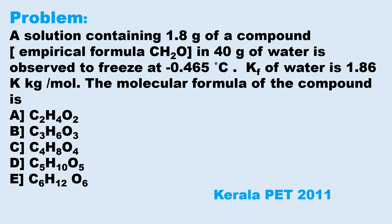A solution containing 1.8 grams of a compound with empirical formula CH2O in 40 grams of water is observed to freeze at −0.465°C. Kf of water is 1.86 K·kg/mol. The molecular formula of the compound is: Option A: C2H4O2. Option B: C3H6O3. Option C: C4H8O4. Option D: C5H10O5. Option E: C6H12O6.